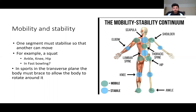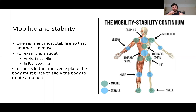In fast bowling this happens again — you have a braced front leg so the body can flex over the top of it. The same applies in rotational sports: in the transverse plane, the body must brace so that left-hand side must brace so the right hand can rotate around it.